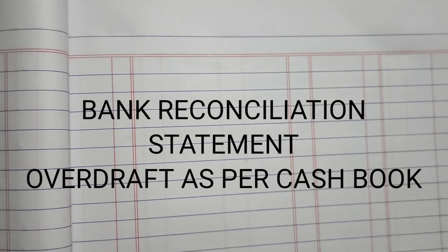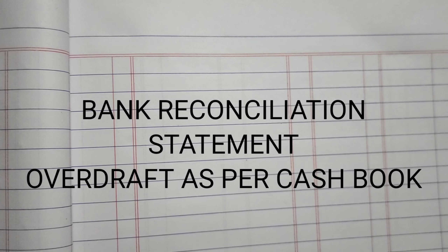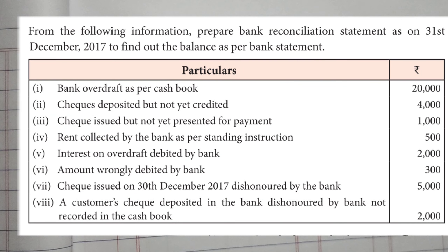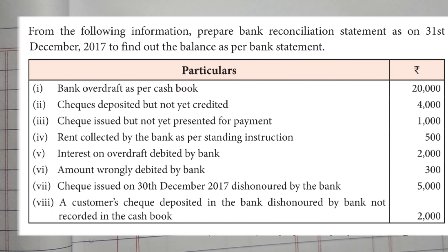Today let's have a look at a bank reconciliation statement where this bank reconciliation statement has an overdraft balance as per cash book. The problem says: from the following information, prepare a bank reconciliation statement as on 31st December 2017 to find out the balance as per bank statement. They have given the first line as bank overdraft as per cash book, and the rest of seven transactions.